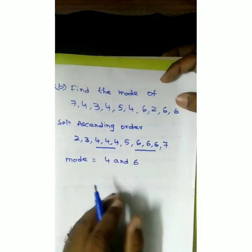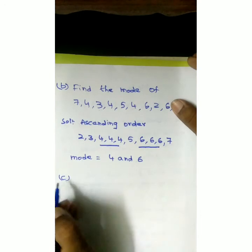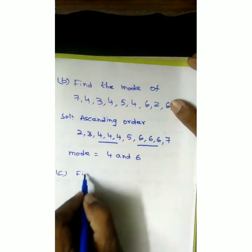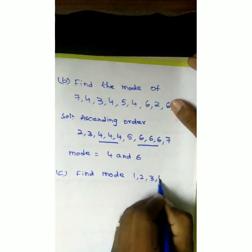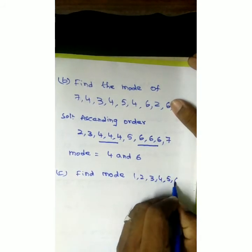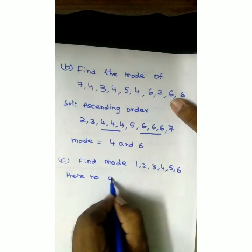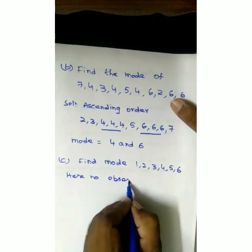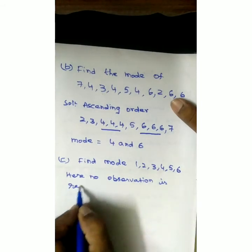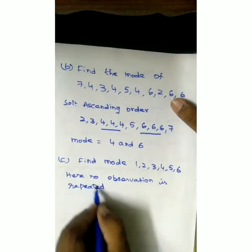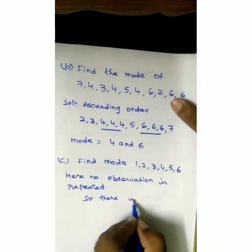A data may have a single mode, double mode, or more than two modes. Let us take one more example: find the mode of 1, 2, 3, 4, 5, 6. Here no value is repeated, no observation is repeated. So there is no mode.